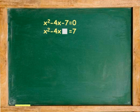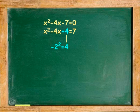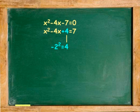Step 2: Take one half of the middle term, negative 4, and square it. Complete the trinomial square with this number by placing it into the empty space. One half of negative 4 is negative 2. Negative 2 squared is 4. Because 4 was added to the left-hand side of the equation, then 4 must also be added to the right-hand side.